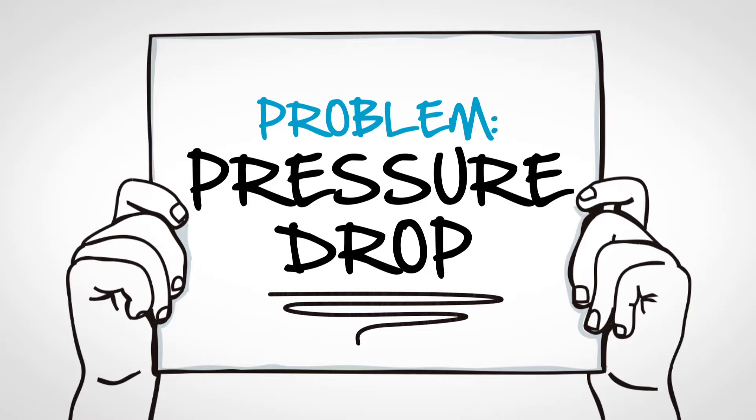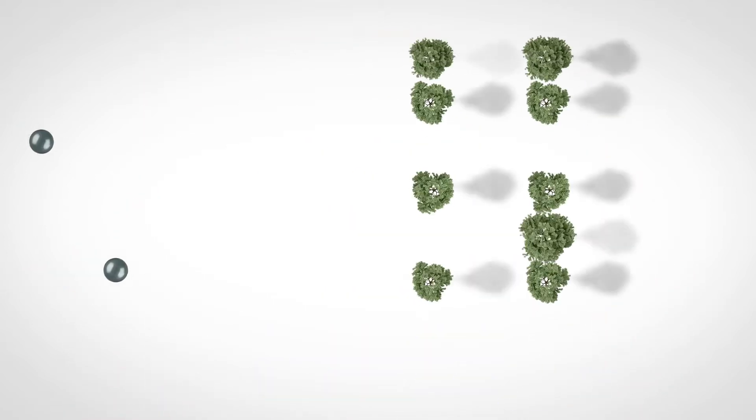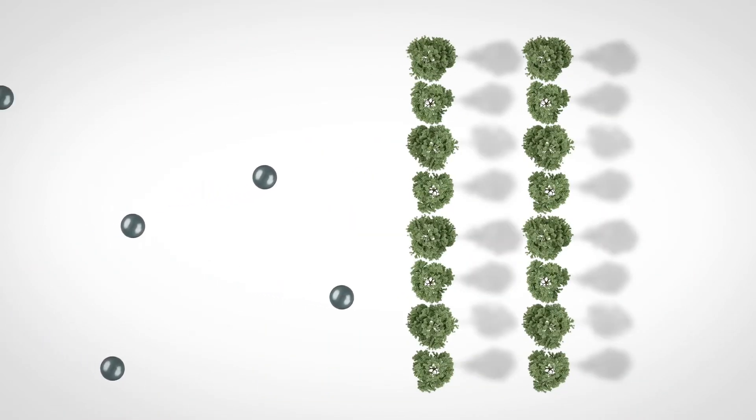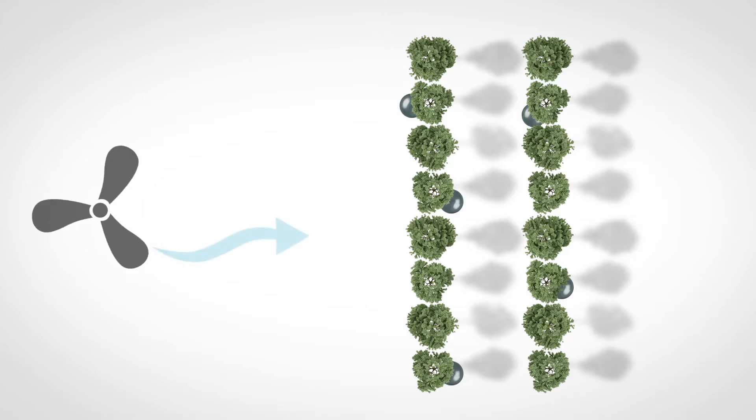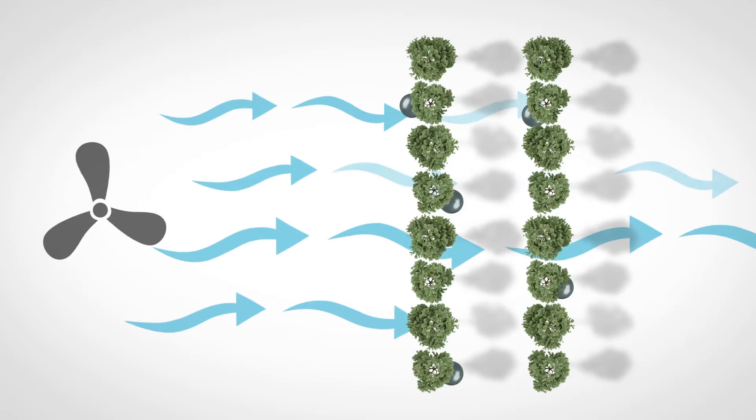You want your filter to catch all oil and contaminants. But ideally, it should also let through compressed air as easily as possible. The traditional filtration technology with its dense forest of trees also hampers the passage of air. This results in a pressure drop after the filter, causing energy loss.